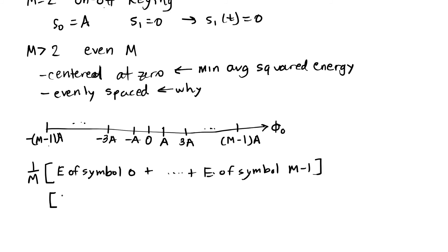For this one, it's going to be M minus 1 quantity squared times A squared. For the next symbol, we'd have M minus 3 quantity squared times A squared. We're going to have 9A squared plus A squared plus A squared plus 9A squared, and then going on to the last one, which will be M minus 1 quantity squared A squared.